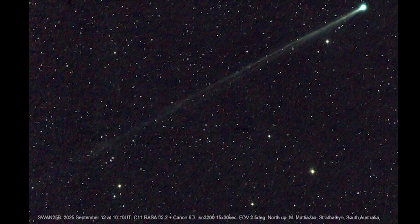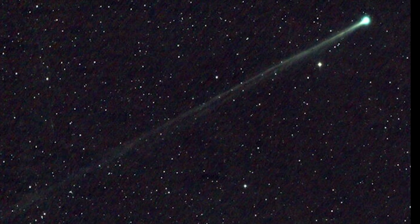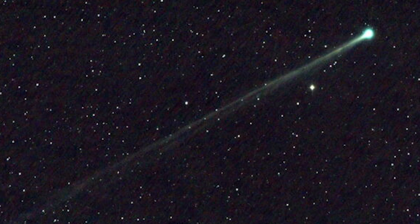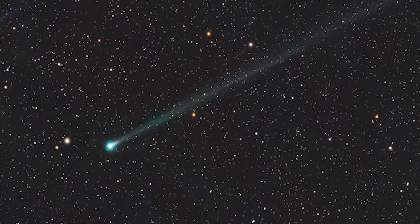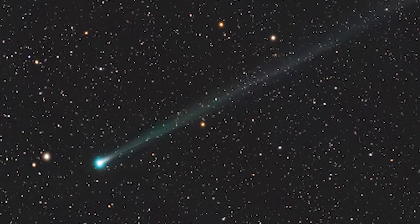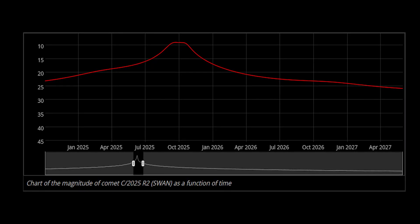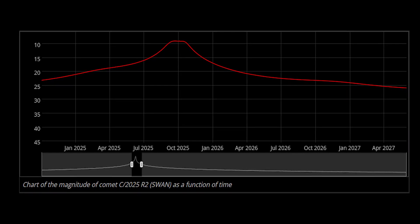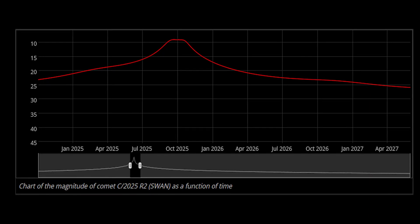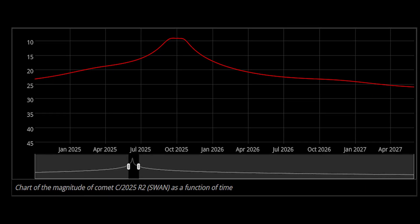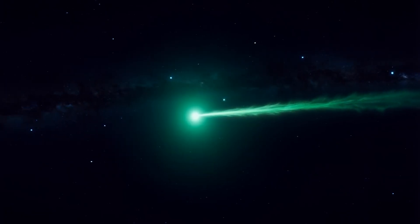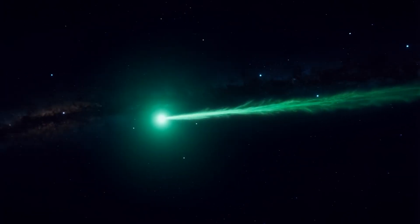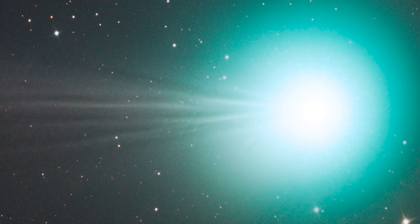It began without warning. In the last days of September, observers in the southern hemisphere reported something strange. A faint, steady comet that had been dimming since perihelion suddenly brightened, not gradually, but in a single burst. Within 12 hours, C2025R2 Swan leapt by more than a full magnitude in brightness. What had been a ghostly smudge became a glowing emerald sphere, visible even through small telescopes. At its core, a chemical firestorm was unfolding.